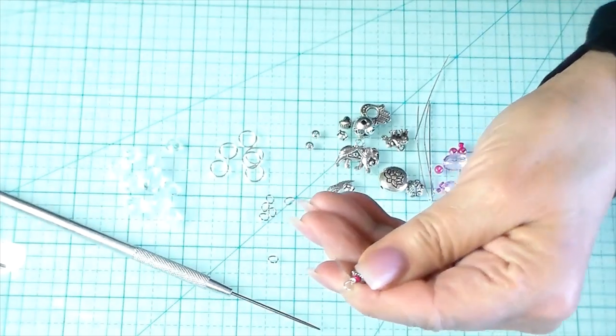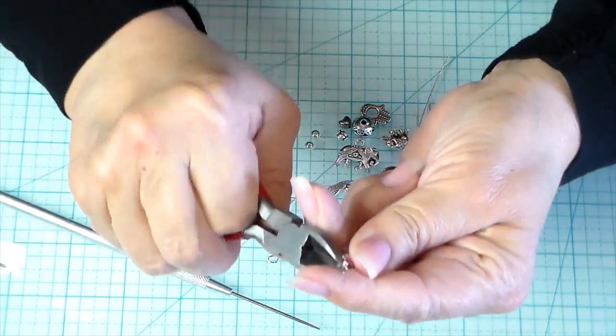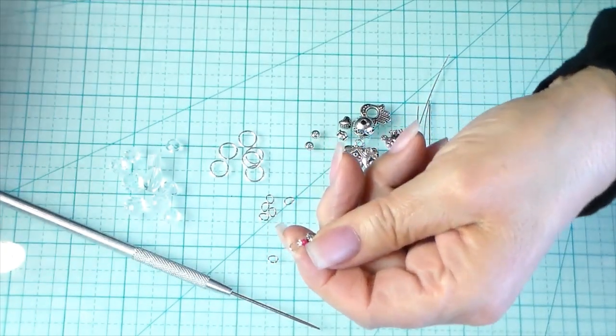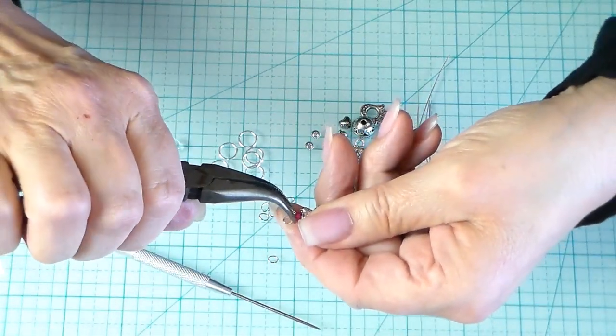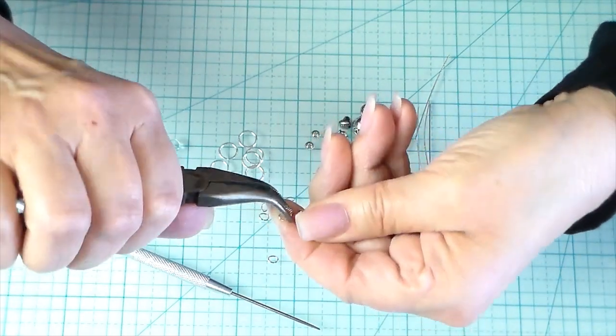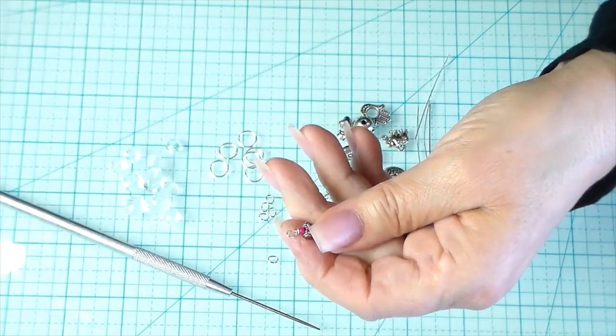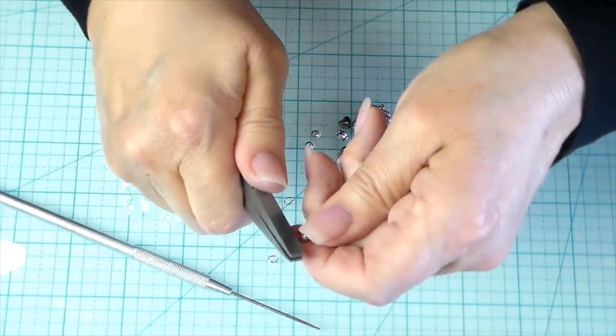Still going to keep it flat as I can. So that the loop isn't twisty. Cut it really close like that. And then I just draw it in. Tidy it up a little bit. Make sure that that cut end is not sticking out.